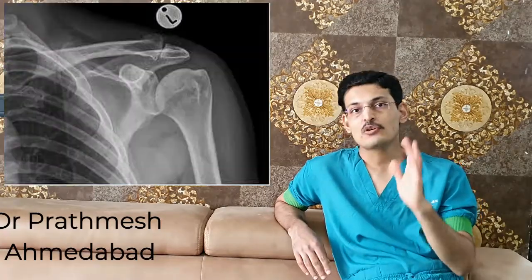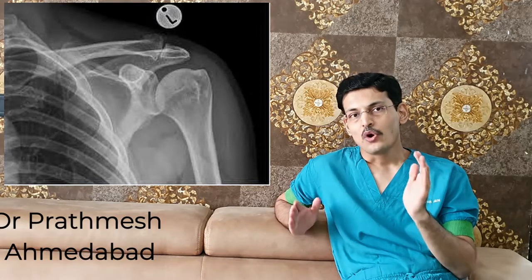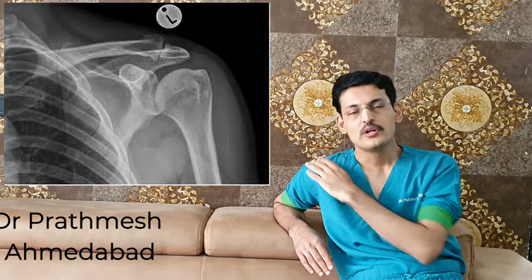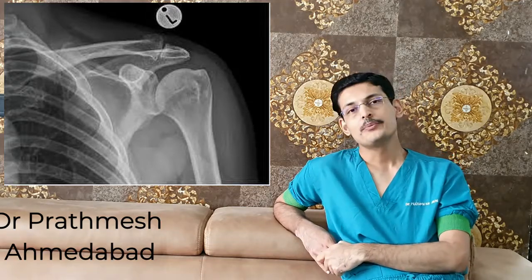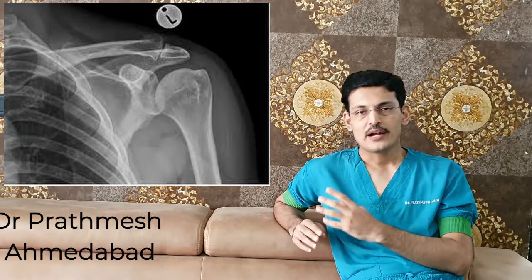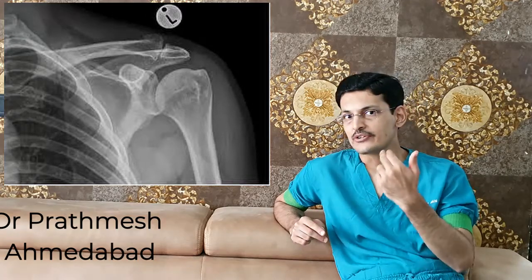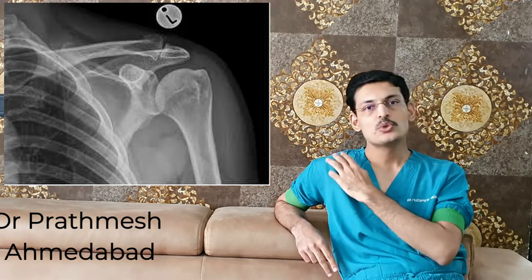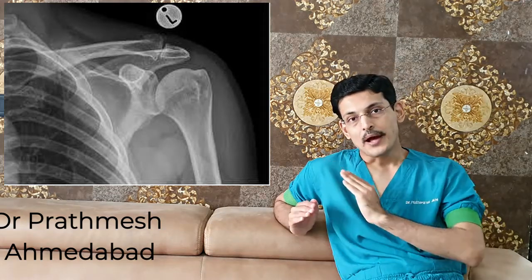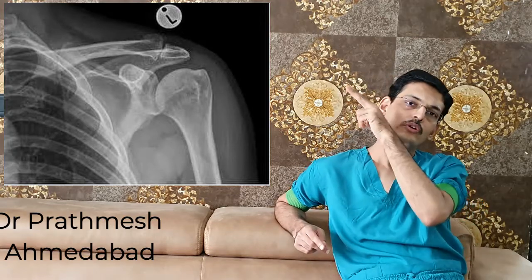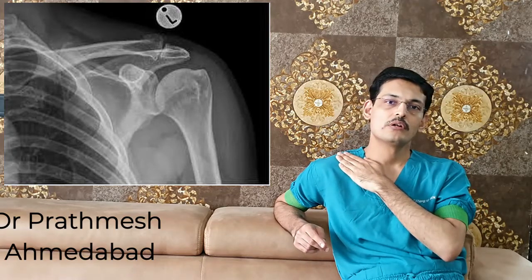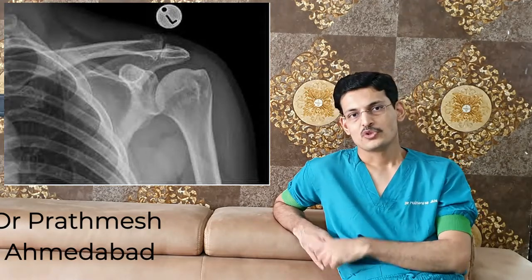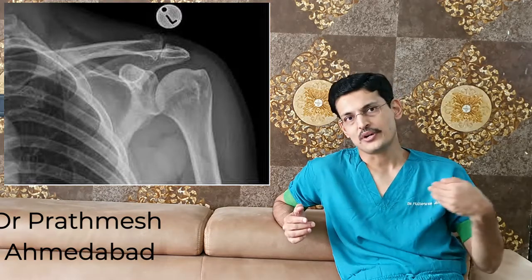Of these, the superior acromioclavicular ligaments are most important, imparting around 68% of resistance against superior translation. In addition, the two coracoclavicular ligaments — the conoid and trapezoid — run from the coracoid to the clavicle and are the primary restraint against upward displacement of the collarbone. MRI gives a good view of all these structures.